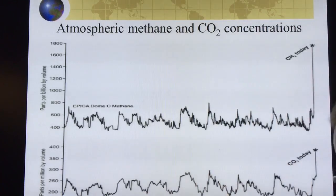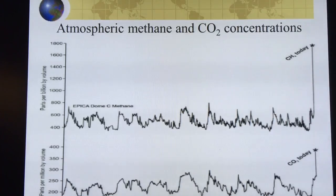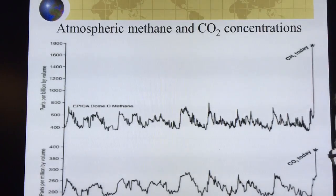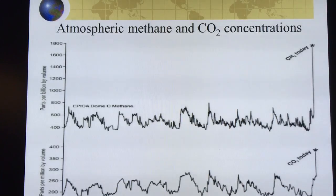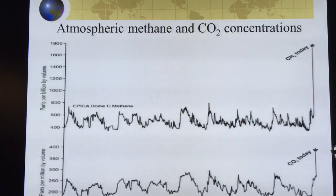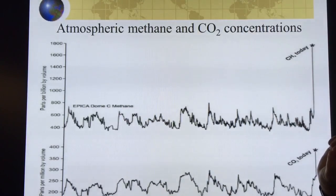Deeper ice corresponds to deeper time as you go further down. How do you know what the time was for different layers? You analyze the oxygen isotopes in the water frozen in the ice, and these oxygen isotopes tell you the temperature when that water was deposited on Antarctica — when it snowed. It gives you an idea of the source temperature of where that water came from, which you can then extract to a temperature.